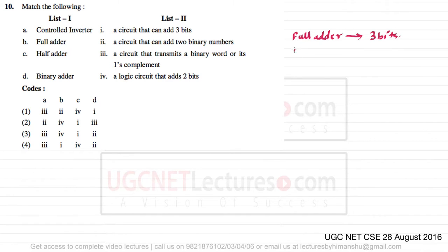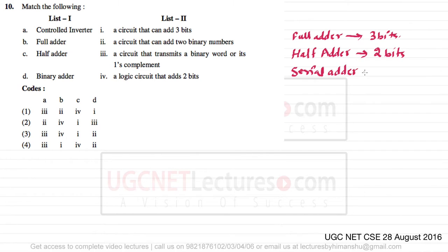The responsibility of a half adder is to add two bits of information. When we have a serial adder, the responsibility of the serial adder is to add n bits of a binary sequence — that is, serial bits of binary sequences.